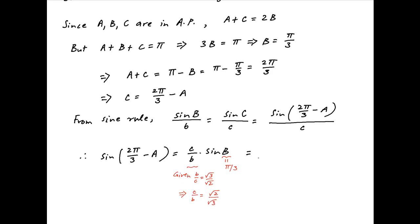Therefore, the right-hand side is equal to root 2 upon root 3 times sine of pi upon 3. This is equal to root 2 upon root 3 times root 3 upon 2, which simplifies to 1 upon root 2.